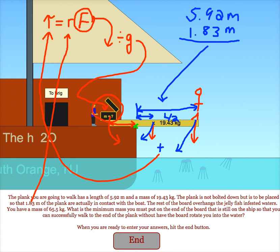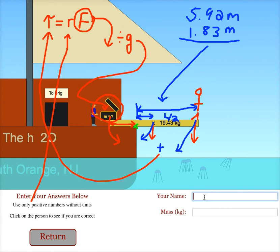To test that we did this right, we simply click on the end button, enter our name and the mass that we found. Then we click on the guy or the board, and it will tell us if we did this correctly.